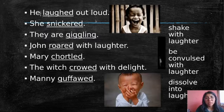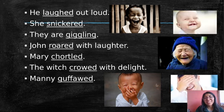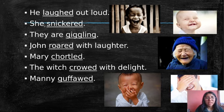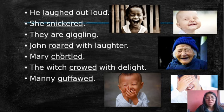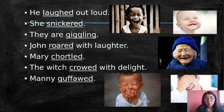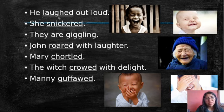We are going to review some examples. Pay attention to the faces. They are laughing. He let out a laugh. She snickered. They are giggling. John roared with laughter. Mary tittered. The witch cackled with delight. Many guffawed. So as you notice, all of those underlined words are synonyms and mean the same thing — you can use them in the same way.